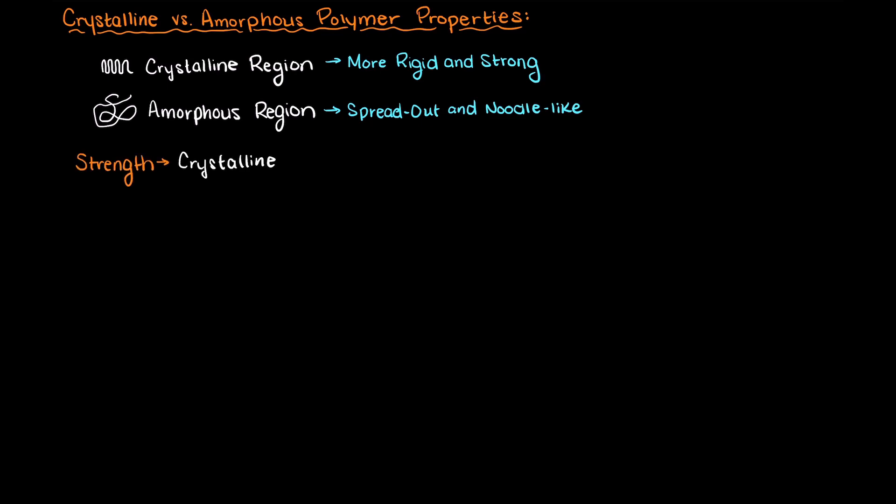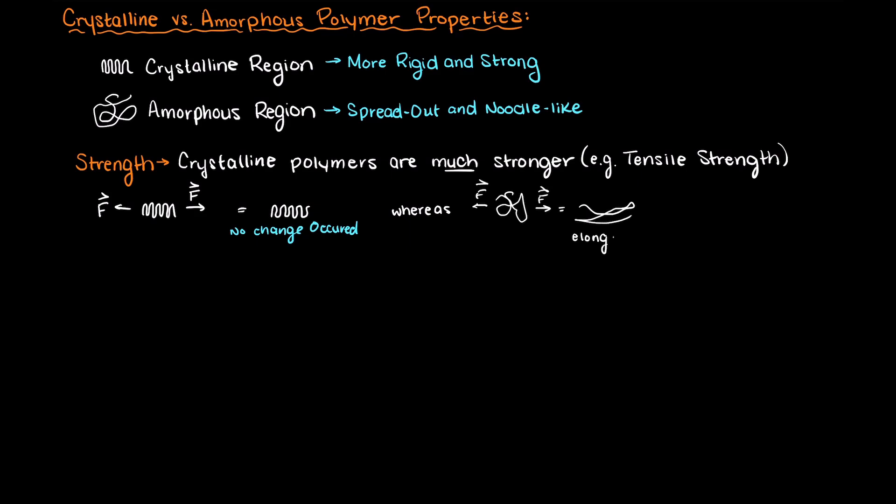In terms of strength, crystalline polymers are generally much higher in just about all measures of strength, such as its tensile strength. This should make sense as in crystalline polymers, the polymers are held really tightly together, and they are much more resistant to movement compared to amorphous polymers. This is going to vary from polymer to polymer in terms of how much difference there is in something like the tensile strength.